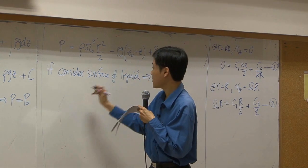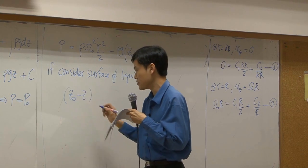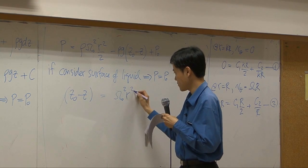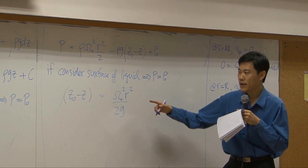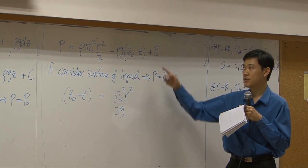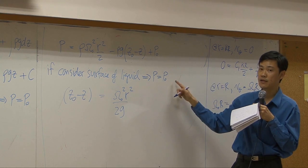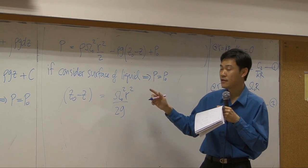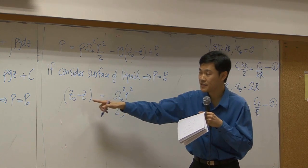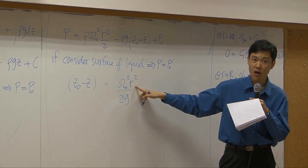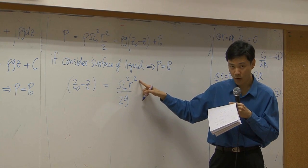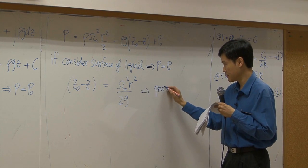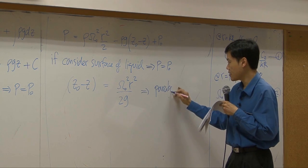As a result, you can manipulate this equation to get z₀ minus z equal to ω²r²/(2g). This comes from replacing the pressure on the left-hand side by atmospheric pressure. This equation relates z with respect to r on the surface, and r here is squared, so the equation by nature is parabolic.